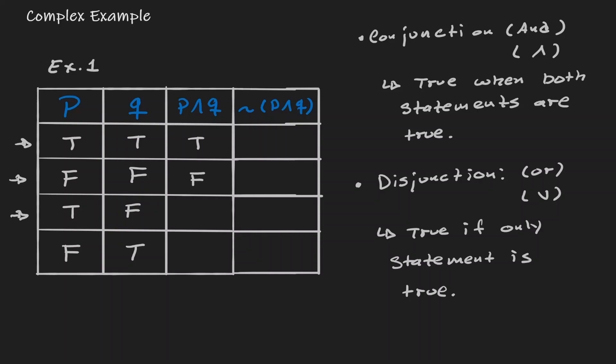In the third row, only one statement is true. But since we're looking at a conjunction, it's only true when both are true — so this is false. And in the last row, only one statement is true as well, so the conjunction is also false. This is why it's important to understand both of those rules.